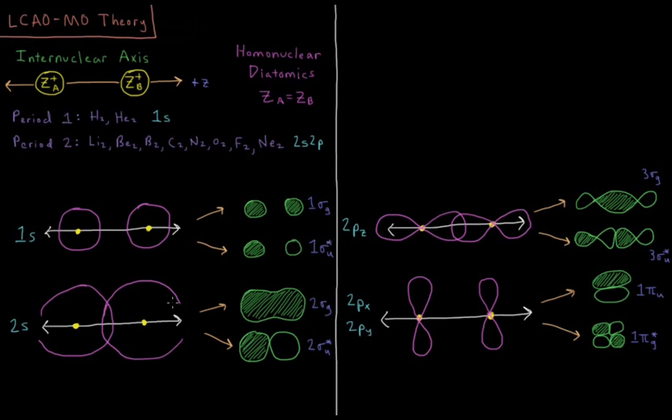The 2s orbitals, which are more diffuse, overlap to form the 2σg and 2σu star orbitals, so bonding, antibonding, symmetric with respect to inversion, g, anti-symmetric, u, but still both sigma orbitals, and they are the second σg and σu star orbitals to show up.